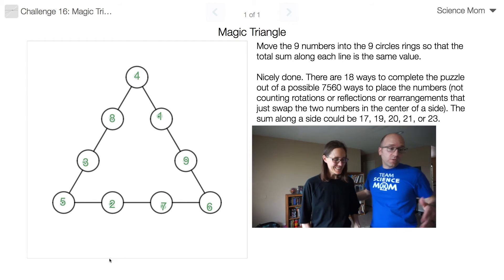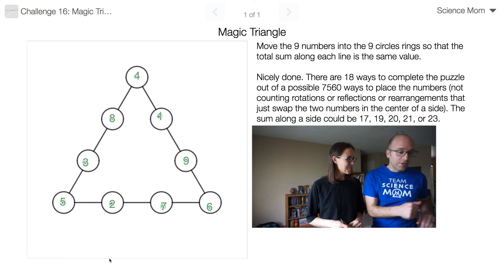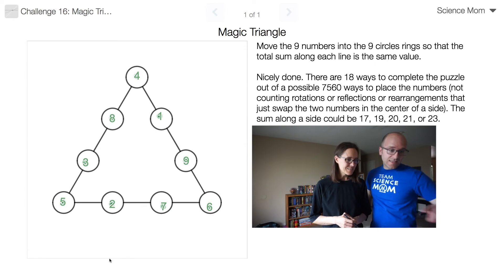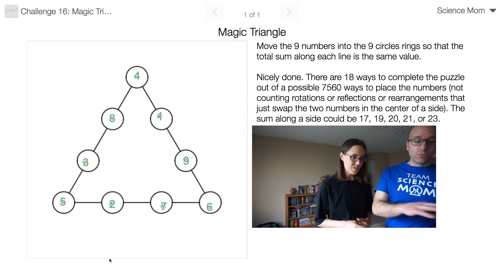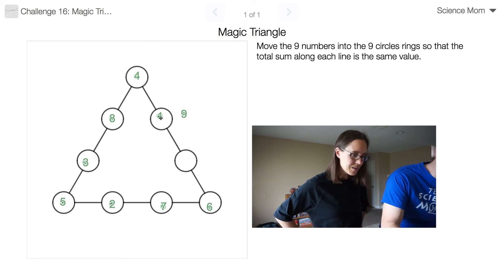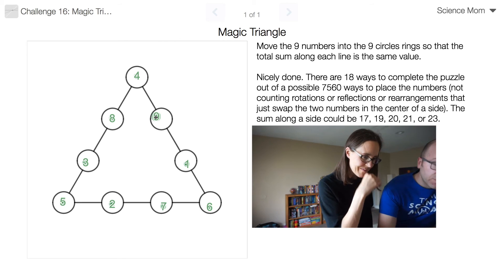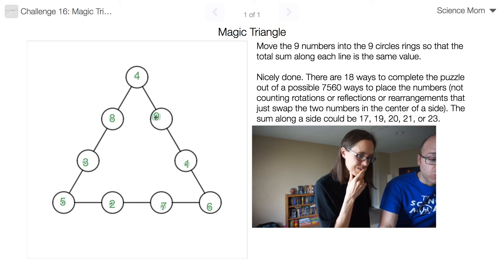So there are multiple ways of doing it. Will you show me the other ways? I'm curious. No. How many solutions are there? So there are 18 ways to complete the puzzle, and that's if you ignore any rotations. Like, for example, if I swap the 1 and the 9, I mean, that's not really a new solution, right? Gotcha. So there are only 18 ways to do it, but the sum could either have been 17, 19, 20, 21, or 23.